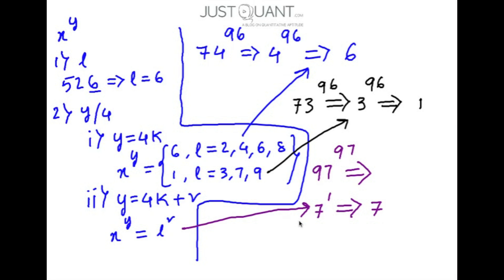Whenever we calculate the unit digit of an expression x to the power of y, we first identify the unit digit in x. We then divide y by 4. If y is exactly divisible by 4, then based on whether l is even or odd, the unit digit of x to the power of y is 6 or 1 — it is 1 if l is 3, 7, or 9, and 6 if l is 2, 4, 6, or 8. If y is not exactly divisible by 4 and gives a remainder r, the unit digit equals the unit digit of l to the power of r.